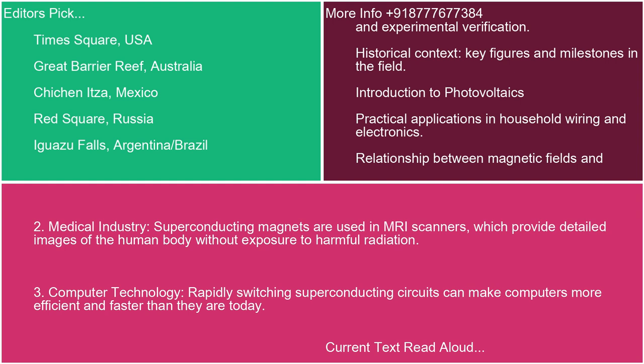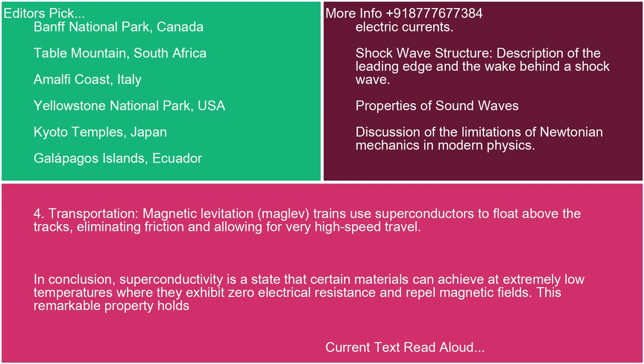Three: computer technology — rapidly switching superconducting circuits can make computers more efficient and faster than they are today. Four: transportation — magnetic levitation (Maglev) trains use superconductors to float above the tracks, eliminating friction and allowing for very high-speed travel.